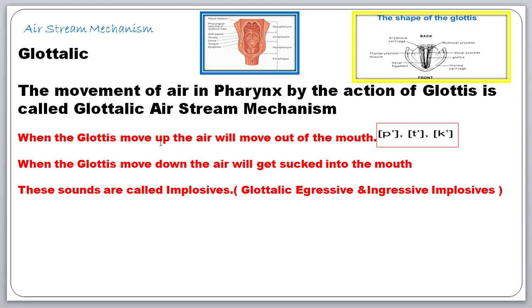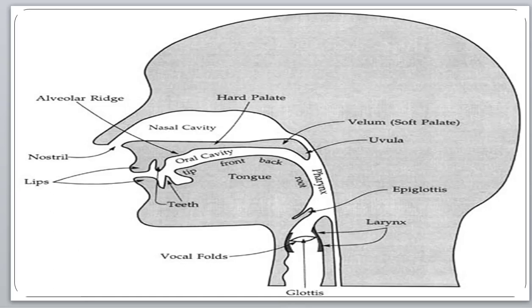When the glottis moves up, the air will move out of the mouth. When the glottis moves down, the air will get sucked into the mouth. These sounds are called implosives — egressive, ingressive, glottolic ingressive, glottolic egressive, implosives. If the air passes inside, because the glottis should remain open for the air to pass, we call it glottolic ingressive, and these are called implosives.